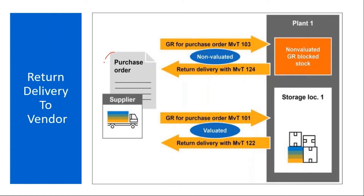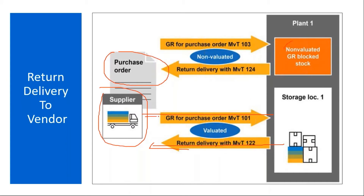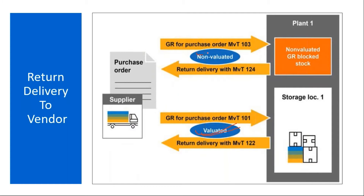Initially you create a purchase order and give it to the supplier. The supplier will supply the material, and then you do the return delivery with movement type 122. For non-valuated GR blocked stock you can also do a return. The general scenario is: you receive the material against the purchase order with movement type 101, place it into your storage location, and later if you observe some problem, you return it to the vendor using movement type 122, which is called return delivery. These movement types apply for both valuated and non-valuated scenarios.